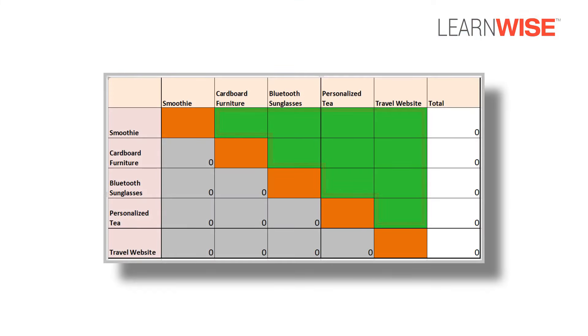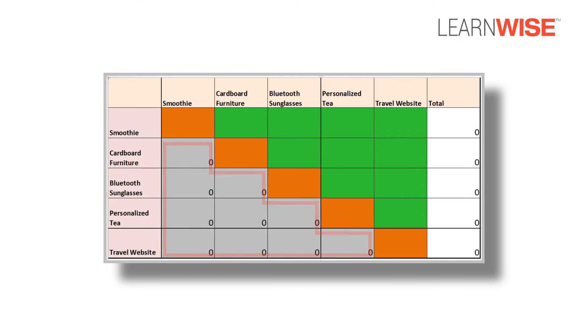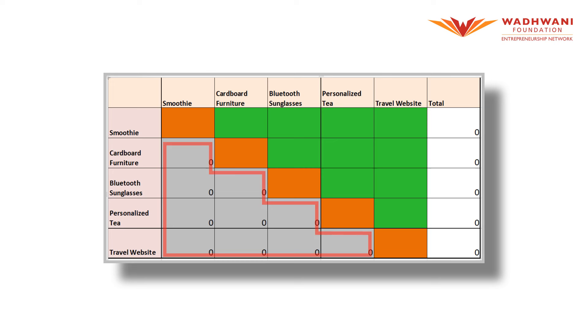The green boxes are where you input the scores. The grey boxes automatically show the corresponding score for the idea it is being compared to.